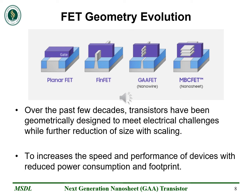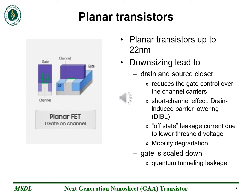Planar transistors worked well up to 22nm, but it was impossible to reduce the size further. Further downsizing brought the drain and source closer, reducing gate control over channel carriers. This led to short channel effects like Drain Induced Barrier Lowering (DIBL), lower threshold voltage, increased off-state leakages, and gate beam scaling increasing quantum tunneling leakage — all of which lower transistor performance.